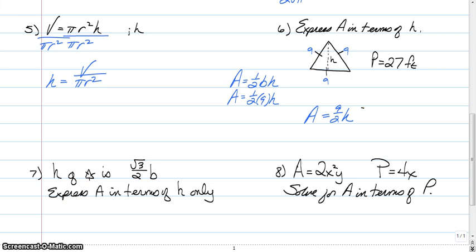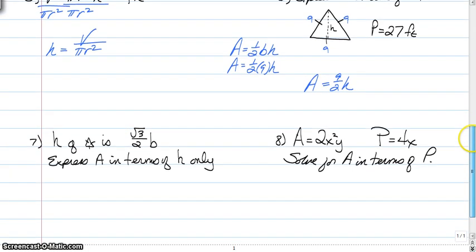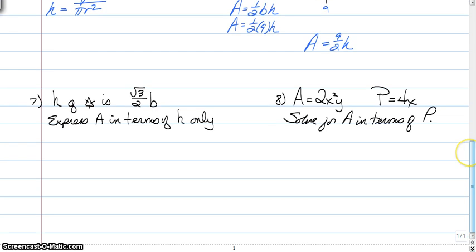These last two questions are multi-stepped. So what we're going to do is we're going to do number 7 together. And then you're going to pause and you're going to try number 8 on your own. So this is a little bit difficult because we are going to manipulate a formula and then plug it into another formula. This says that h of an equilateral triangle is √3/2b. The height of an equilateral triangle is √3/2b. And we're going to express the area in terms of h only.